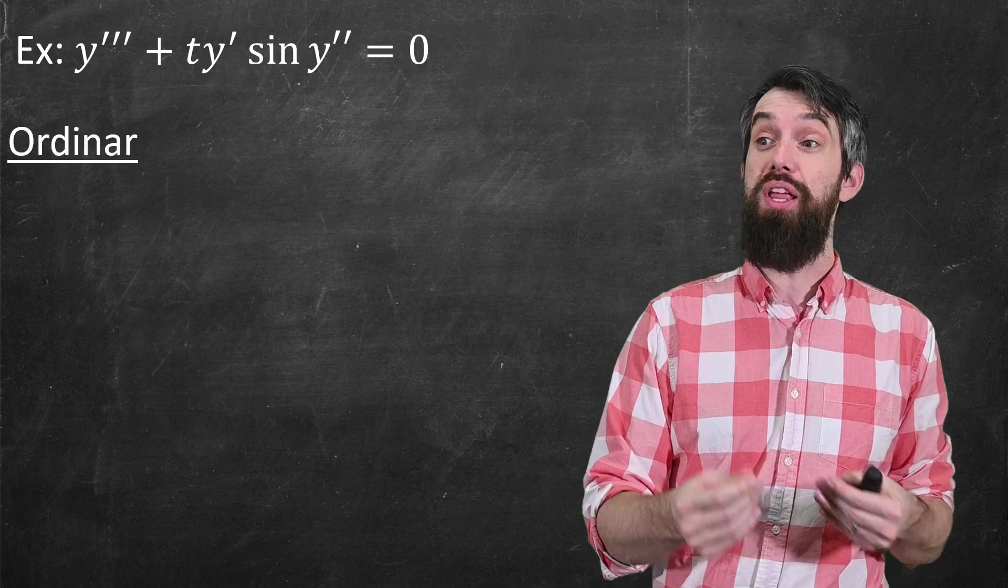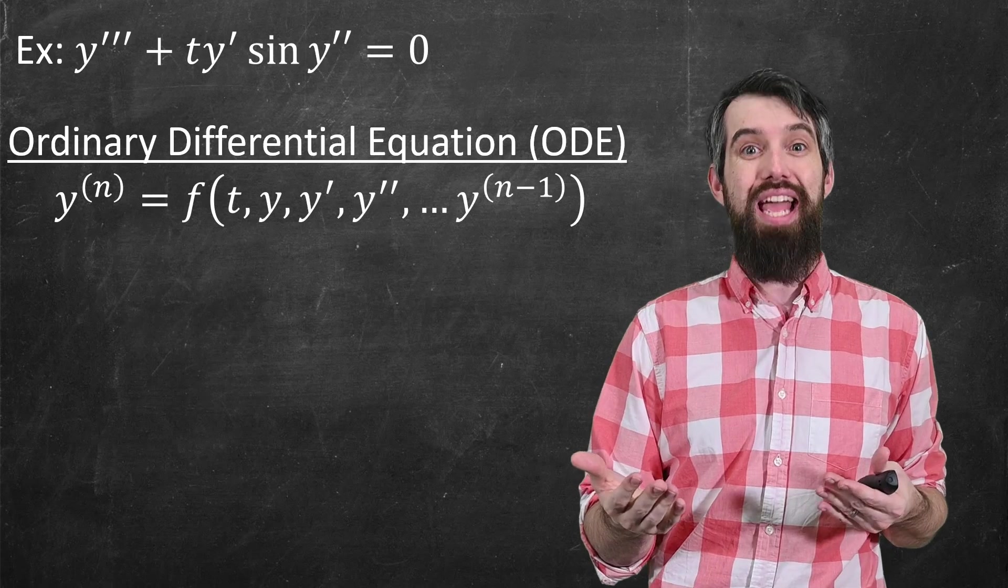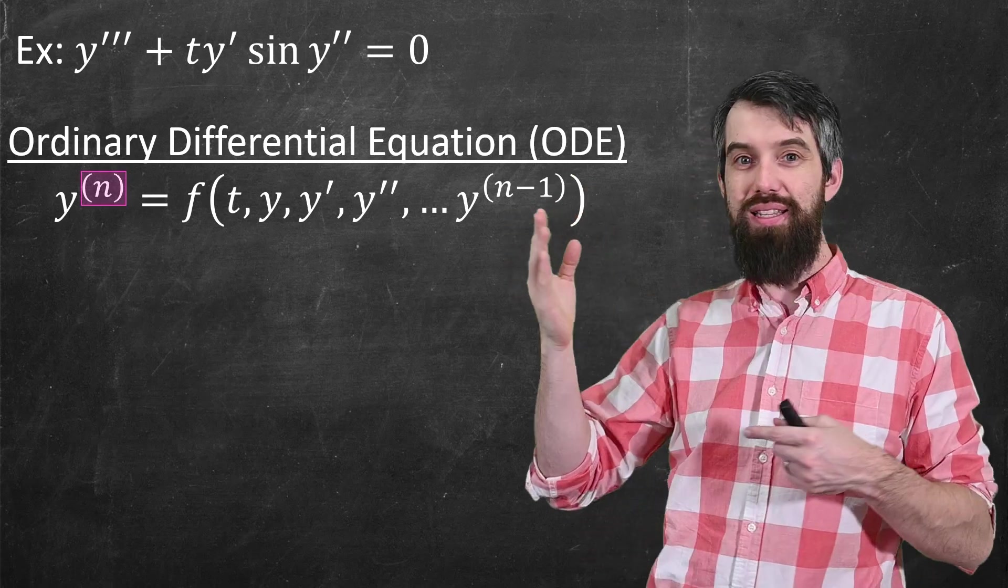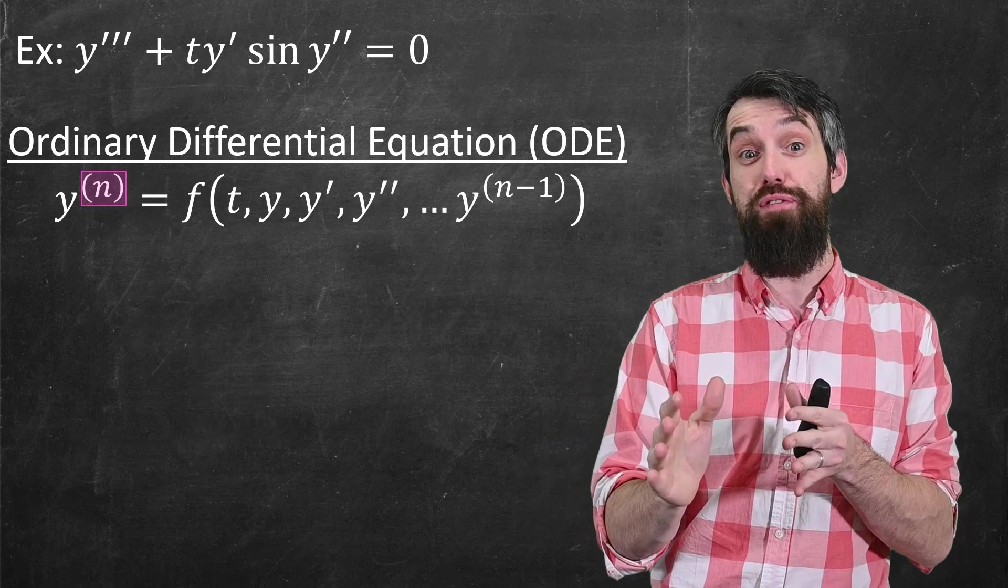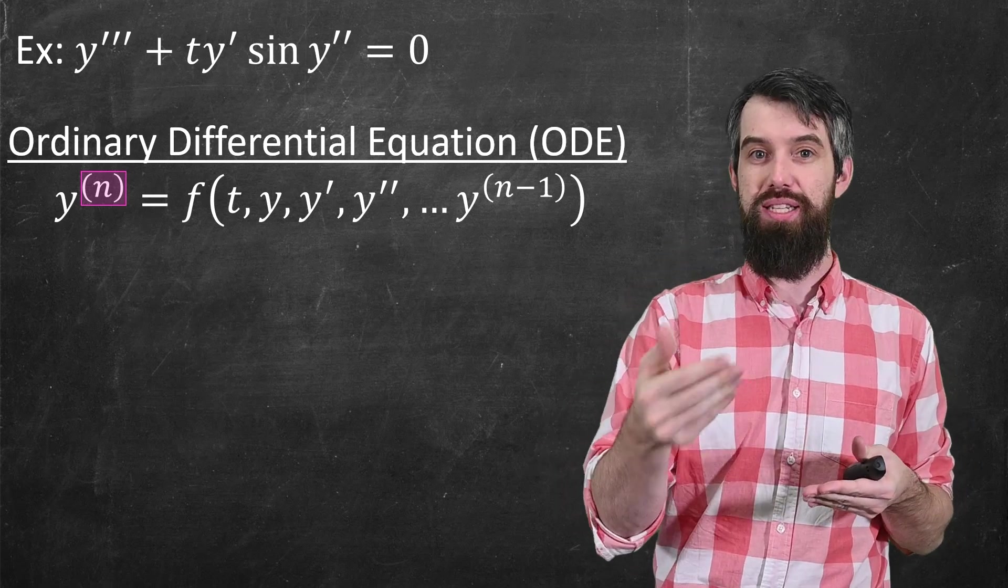To be a little bit more precise, we're going to begin by talking about ordinary differential equations. And in this description, on the left-hand side, I have the nth derivative of y. When you put the n in brackets and put it as a superscript, this denotes the nth derivative, not to be confused with y to the power of n.